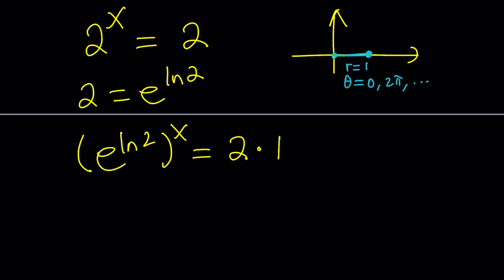So we can write 1 as e to the power 2 pi n i, where n is an integer. Make sense? So here, we can replace this 1 with that, which is this 1. It's going to be e to the power 2 pi n i. Make sense? Great. Let's go ahead and erase this, because this kind of looks confusing.